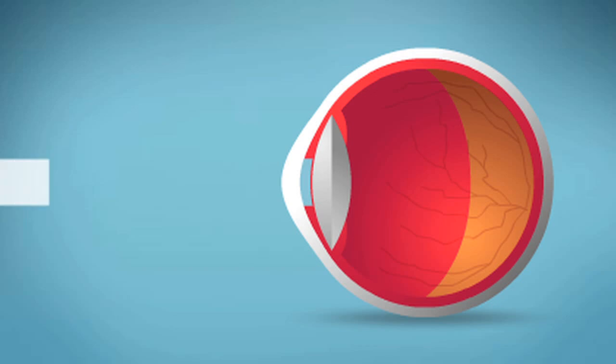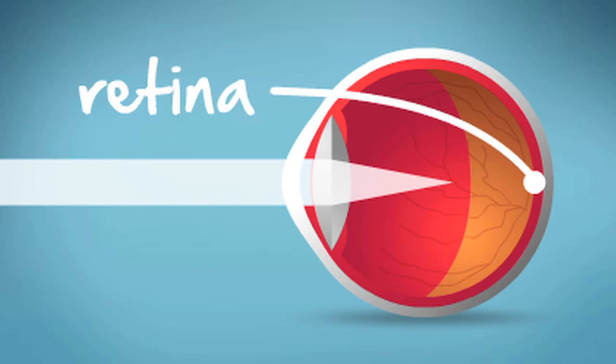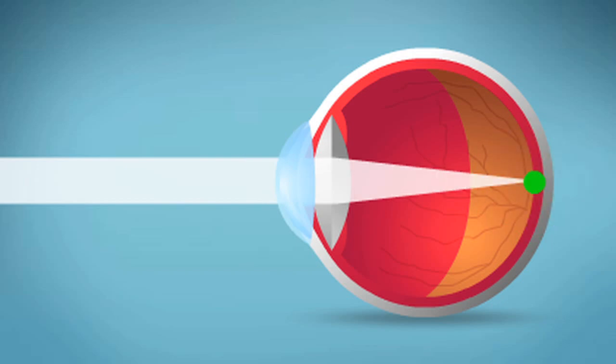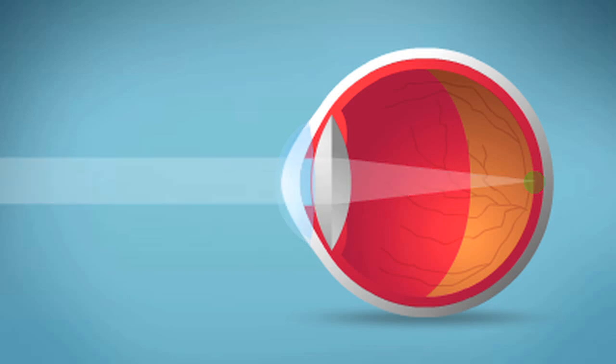Light rays entering the eye also must be bent into a precise point of focus on the retina found in the inner back of the eye. When this doesn't happen, our vision is blurred. Eyeglasses and contact lenses sharpen focus by bending light and changing the way it enters the eye. But why do we have blurry vision in the first place?